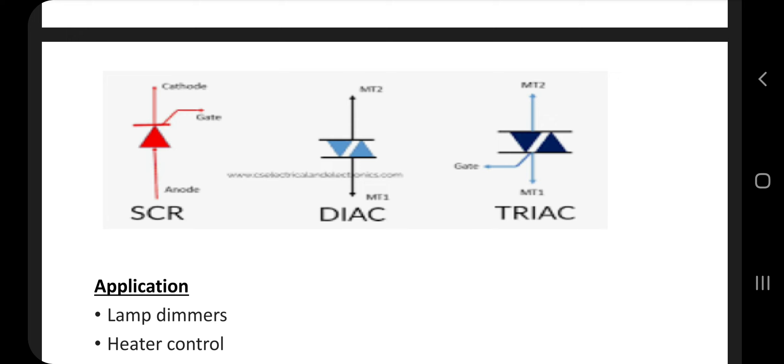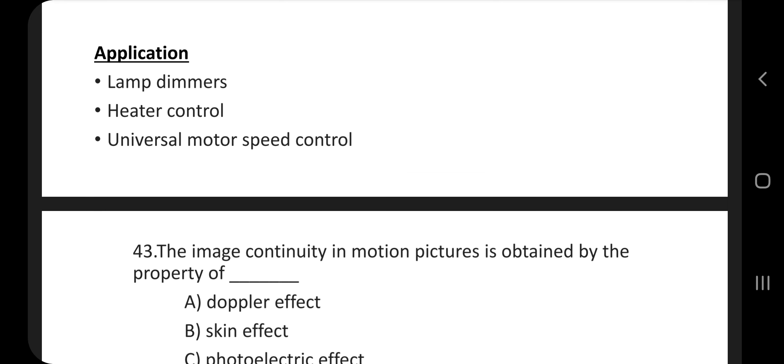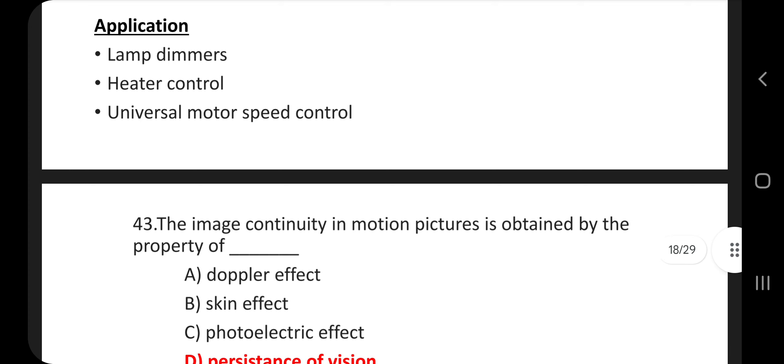This is symbol of SCR, DIAC, and TRIAC. We can understand the difference between SCR, DIAC, and TRIAC from the symbol. Application: lamp dimmers, heater control, universal motor speed control.